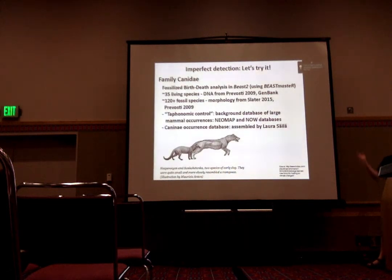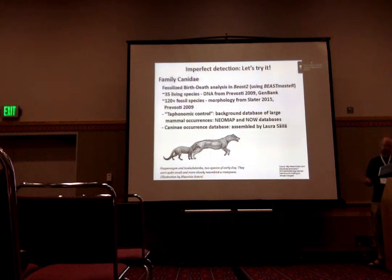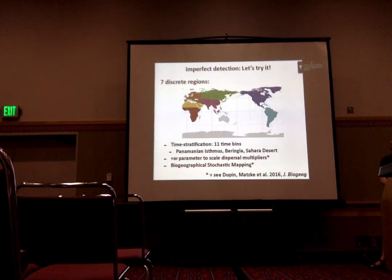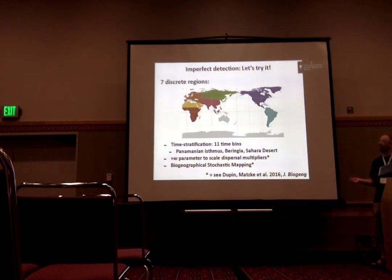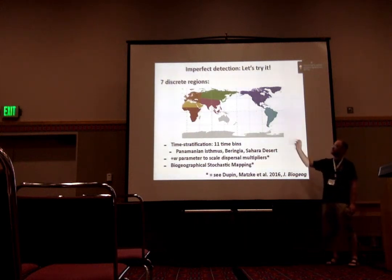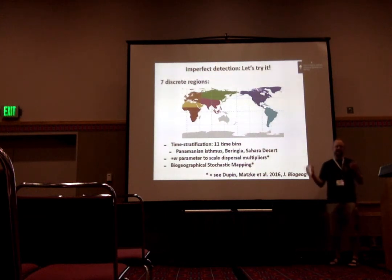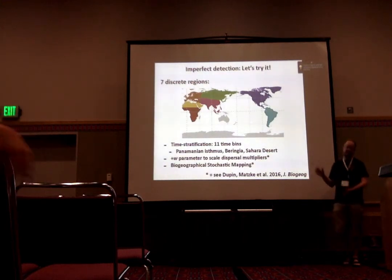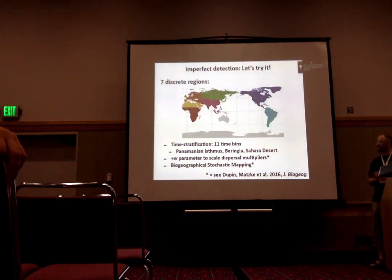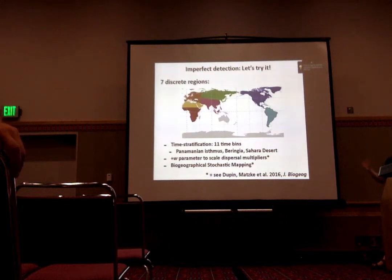I tried this on the fossil dog dataset. The background database was NeoMap and NOW databases, which are fossil databases, and Laura Sela assembled an occurrence database for our target clade. We used seven discrete regions and 11 time bins to represent the last 11 million years, covering the formation of the Panamanian Isthmus, Beringia, and the Sahara Desert. I used a plus-W parameter, putting dispersal multipliers representing relative plausibility of dispersal between regions, and estimated the exponent W. If W equals zero, the weight matrix cancels out; otherwise it scales appropriately. We used biogeographic stochastic mapping to get a sample of histories under a particular tree.